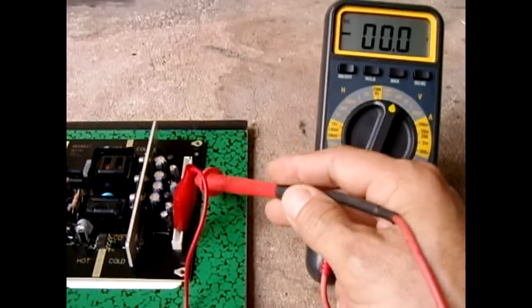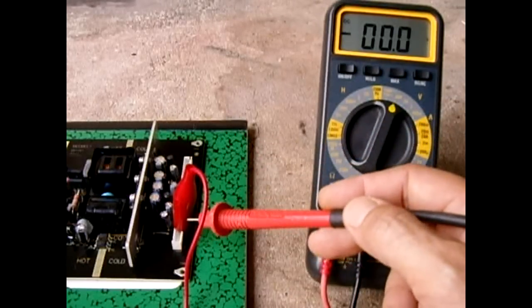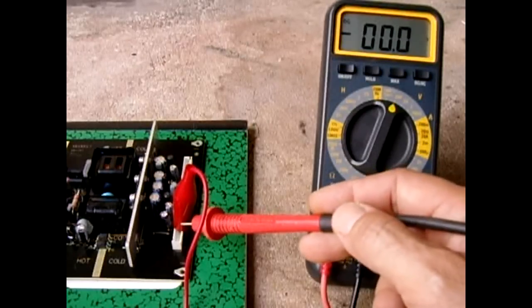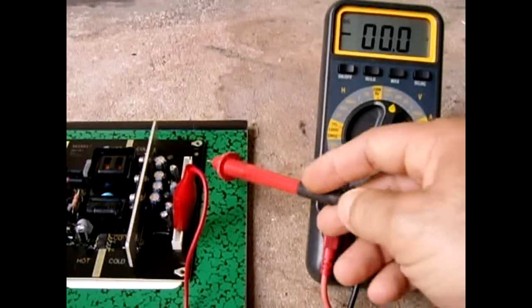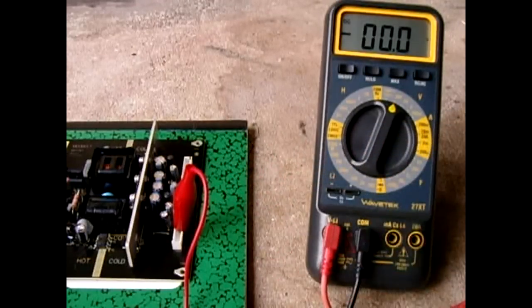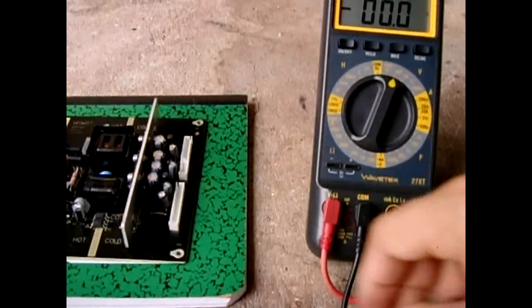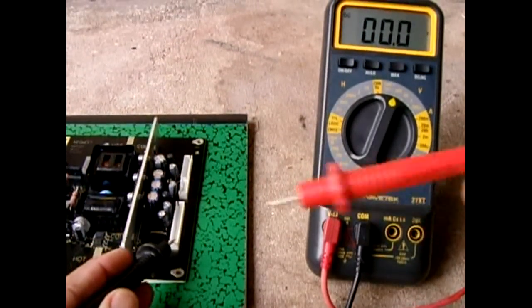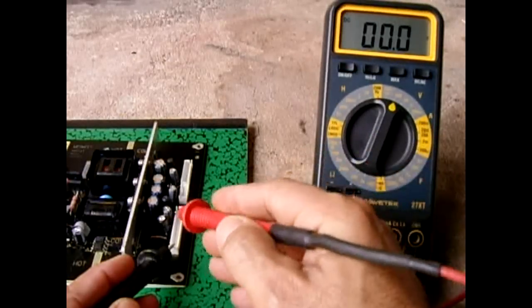If you check all of these and you're still not getting voltage on any of them, double-check to make sure that the two pins for PSON are shorted together. If they're not shorted together, you're not going to have any power registering throughout any of these harnesses. You can also remove this and go from ground to power switch on to make sure that pin is getting voltage.